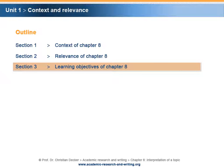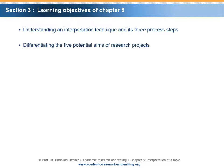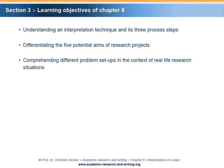Section 3 – Learning Objectives of Chapter 8. What are the learning objectives of this chapter? After this chapter, you should understand a widely used interpretation technique and its three process steps. Furthermore, you should be able to differentiate the five potential aims of research projects. Additionally, you should comprehend different problem setups in the context of real-life research situations. Finally, you should be able to analyze a name in the context of a problem setting.